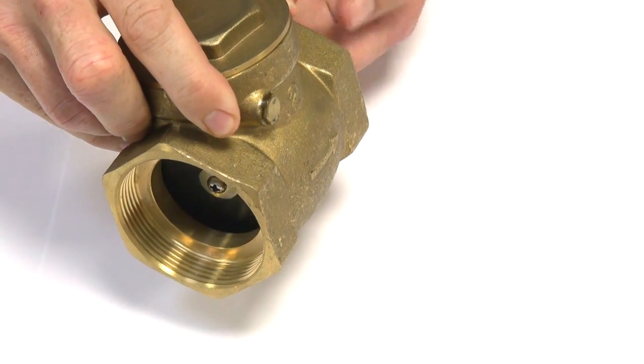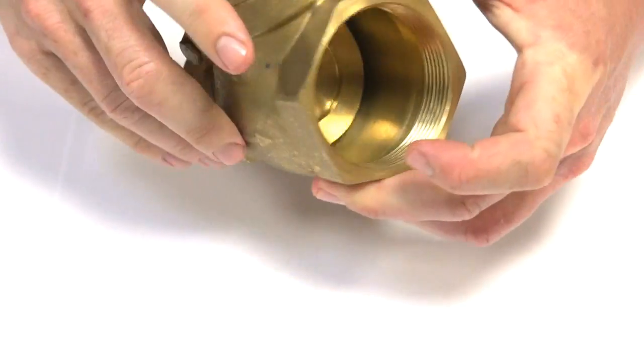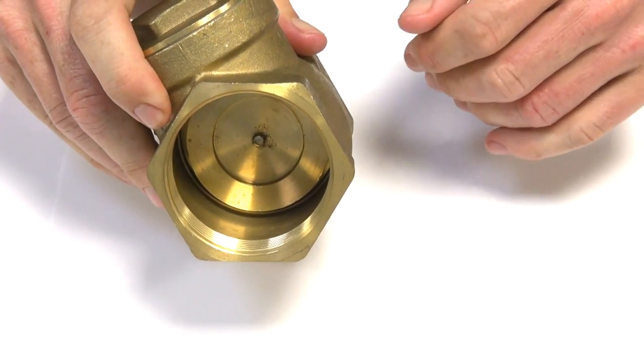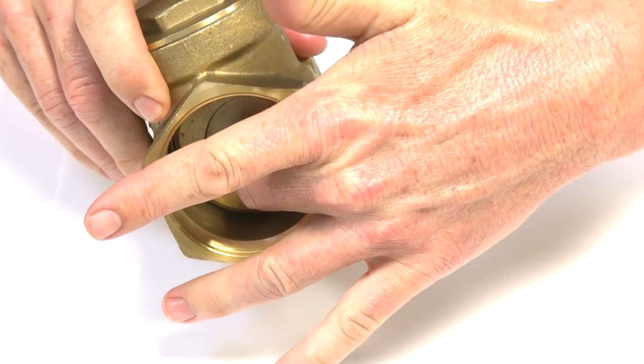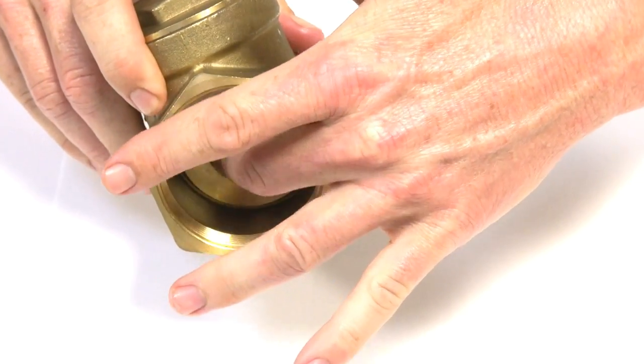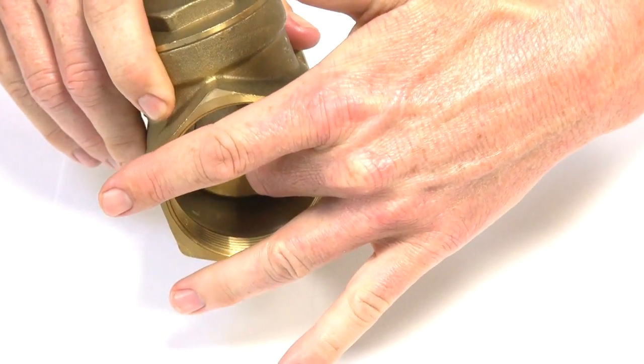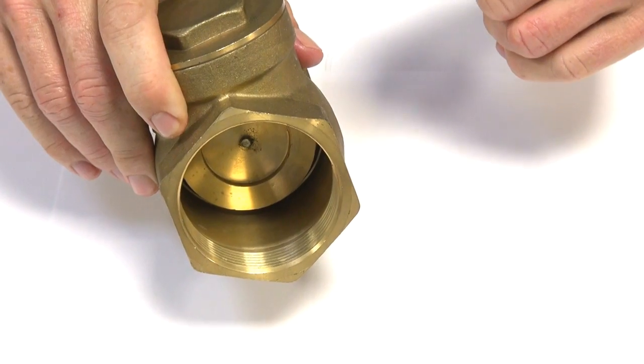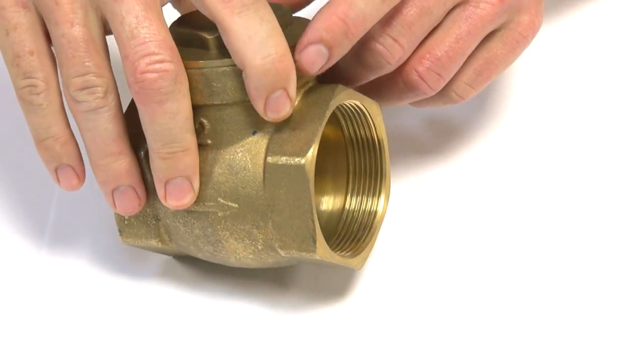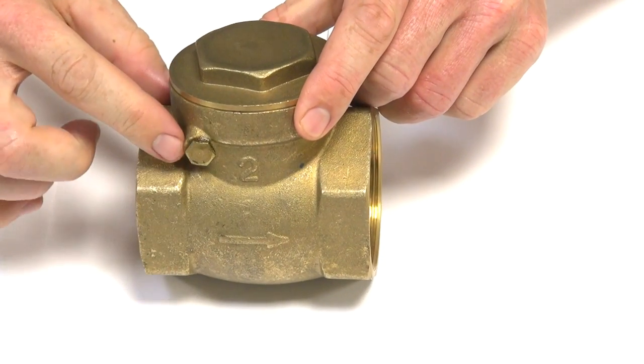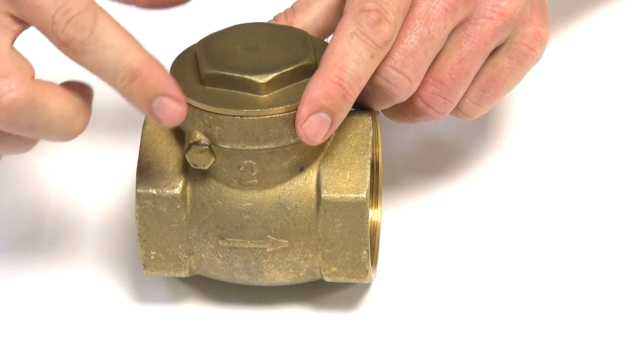When the fluid, air, or inert gas comes in the other direction, it pushes against the back of the gate here and pushes that into the seat and stops any flow going through. So it's used as a check valve. You can see this part here, this is where the gate is hung and where it swings.